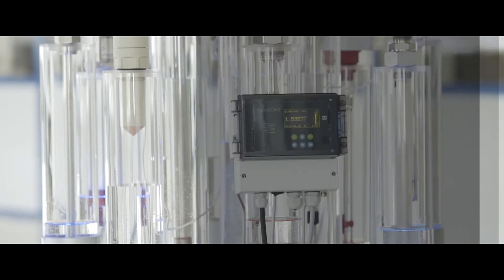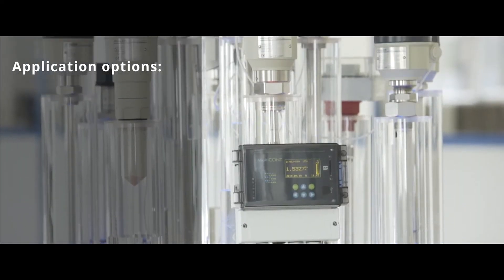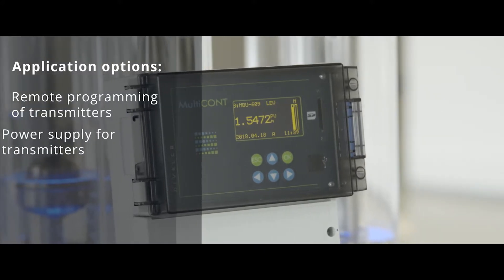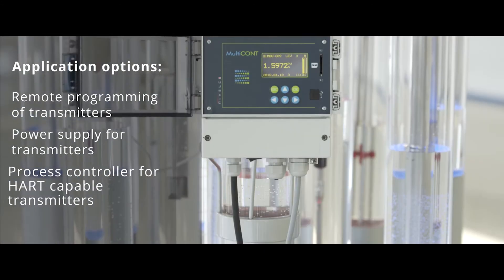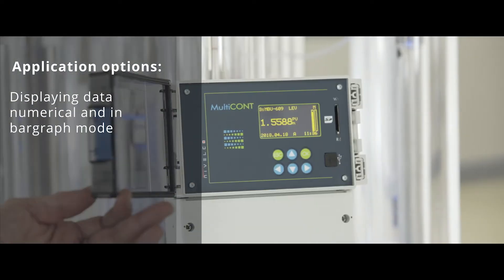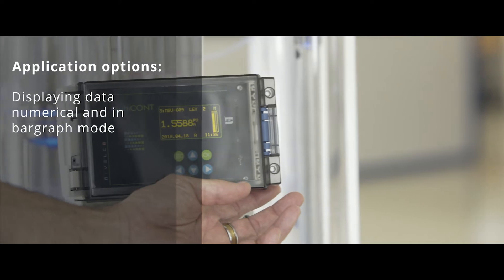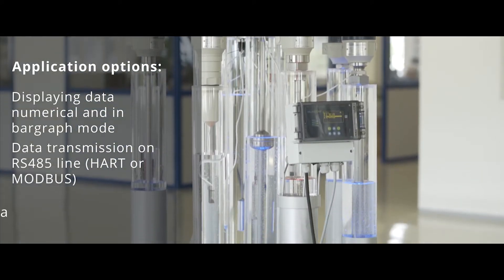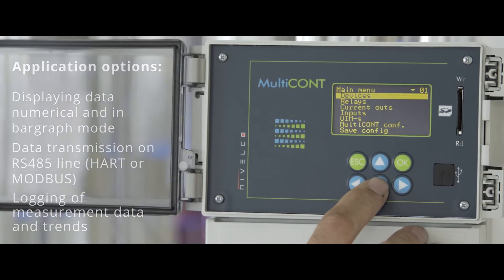Multicont process controllers are recommended for the following tasks: easy remote programming and displaying of transmitters, power supply for two-wire transmitters, flexible process controller for HART-capable transmitters, displaying measurement data numerical and in bar graph mode, data transmission on RS485 line with HART or Modbus protocol, trend logging or logging of flow measurement data.